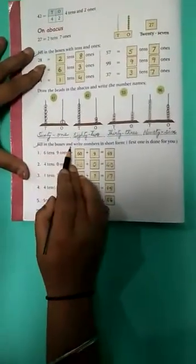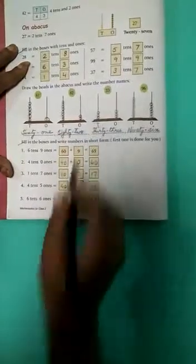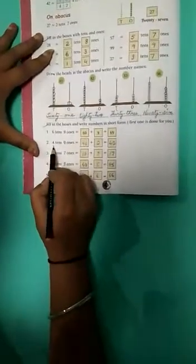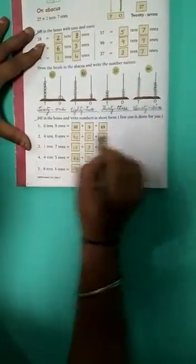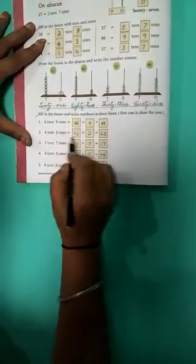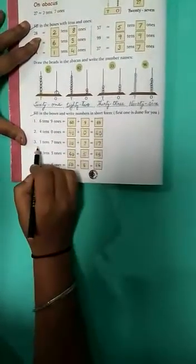Question number 3 is fill in the boxes and write number in short form. Means here question is given, you have to first fill the box and write in short form. So, second one is you see. 1 is already done. Second you see 4 tens, 0 ones. 4 tens means 40 plus 0, equals 40.